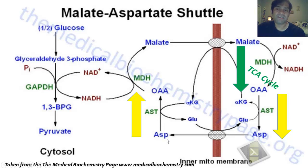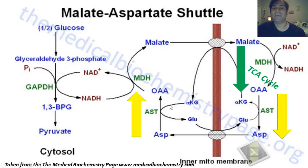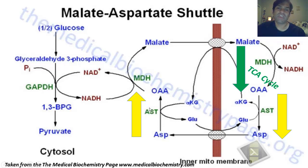The recipient of that alpha amino group from aspartate is alpha-ketoglutarate, which by virtue of receiving that alpha amino group becomes its corresponding alpha amino acid glutamate. And as stated before, that glutamate is in an antiporter relationship with aspartate. So we have transamination reactions running in opposite directions in the cytoplasm and in the mitochondrial matrix.